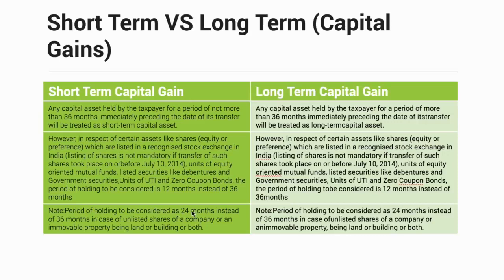The second exception uses a 24-month period instead of 36 months. The categories that fall under this are immovable property — being land, or building, or both — and unlisted shares of a company. If you buy a share of a company not listed on a recognized stock exchange, the duration is 24 months. Similarly, if you buy land and sell it within 24 months, that would be treated as a short-term capital gain.